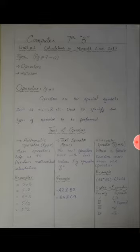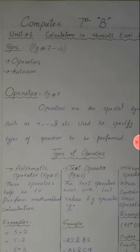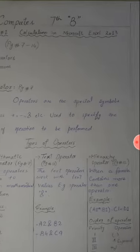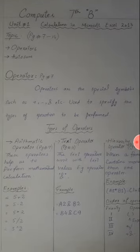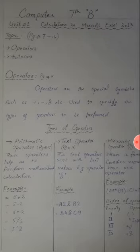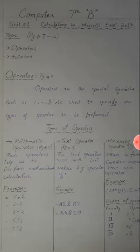First of all we are going to discuss operators on page number seven. Operators are special symbols such as plus, minus, and, or, etc. used to specify the types of operation to be performed. Operators are symbols used to perform different special operations.